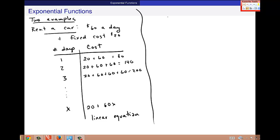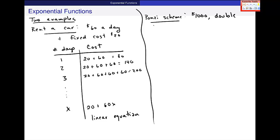In contrast to that, I want you to think of an example like a Ponzi scheme. Some guy comes to you and tells you that if you invest $1,000, he can double your money every month. So this is the number of months and this is the amount of money. You put in $1,000. After one month, he's supposed to give you what? $2,000.